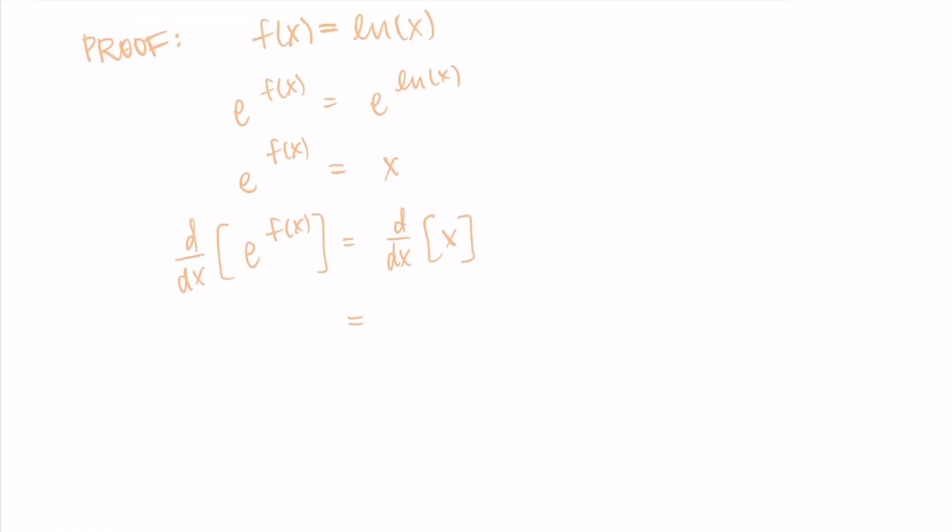Now I'm going to take the derivative of both sides. The derivative of x is pretty straightforward—it's just 1. For e to the f(x), we're going to use chain rule. So e to the something is the outside function, f is the inside function, so I write e to the f(x)—that's its own derivative—times the derivative of the inside function, f'(x).